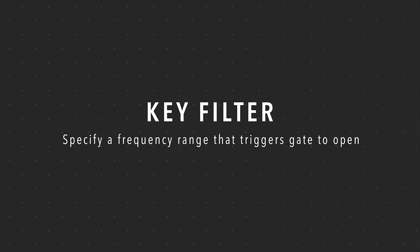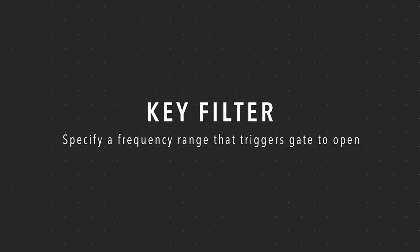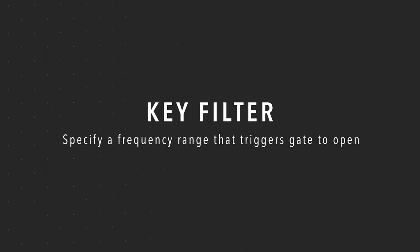Last but not least is the key filter, which allows you to target specific frequency ranges that trigger the gate to open. For example, if you have a gate on the snare drum to cut out mic bleed from the cymbals but your cymbals keep sneaking through anyway, you could use a key filter to target a specific frequency range prominent in the snare but not the cymbals, like 250 Hz. This would prevent the cymbals from triggering the gate to open.